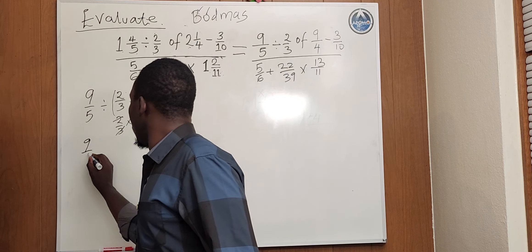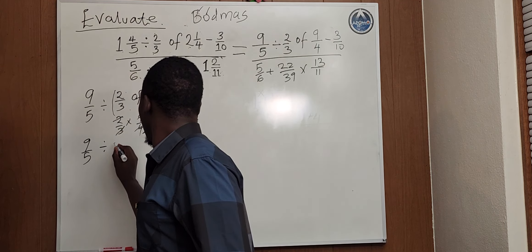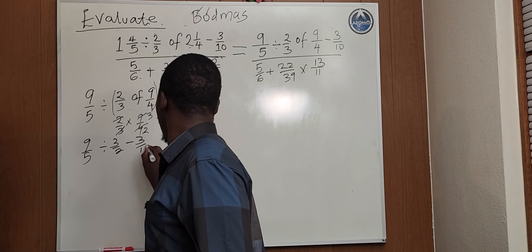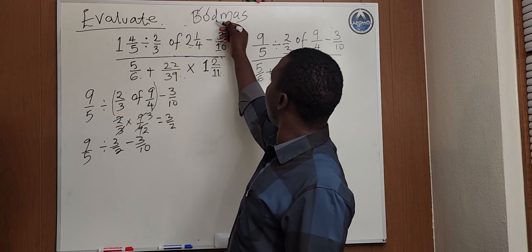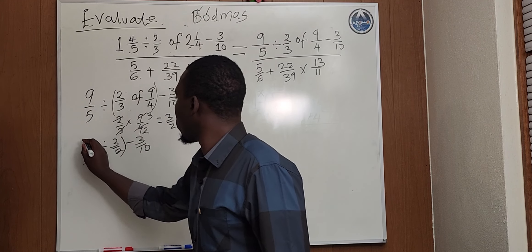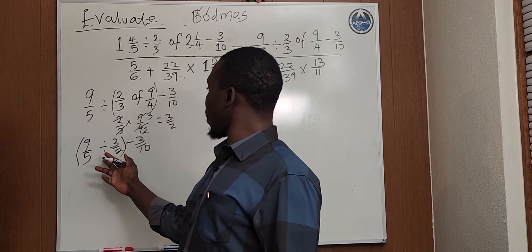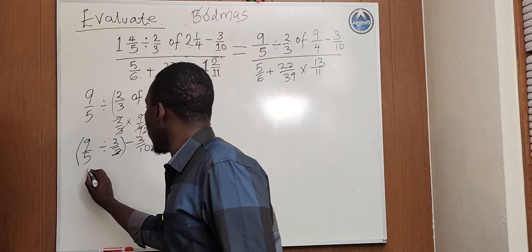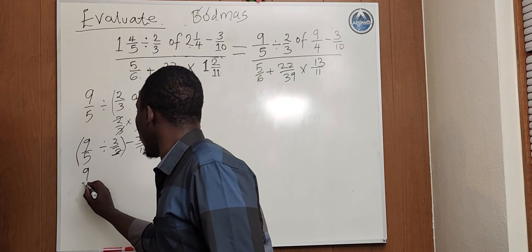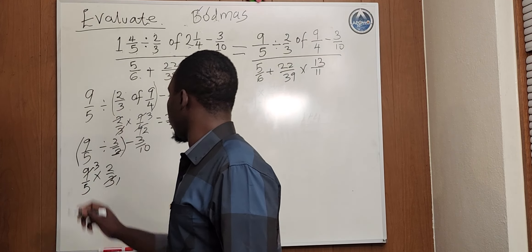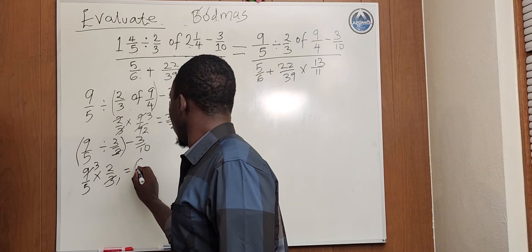Then we'll write this in full equation like this. Now the next part is division, looking at these two, this is the next part. When we divide, it's the same as multiplying the reciprocal of this term, which will give us 9 over 5 times 2 over 3. If you cancel out here, it will give us 6 over 5.